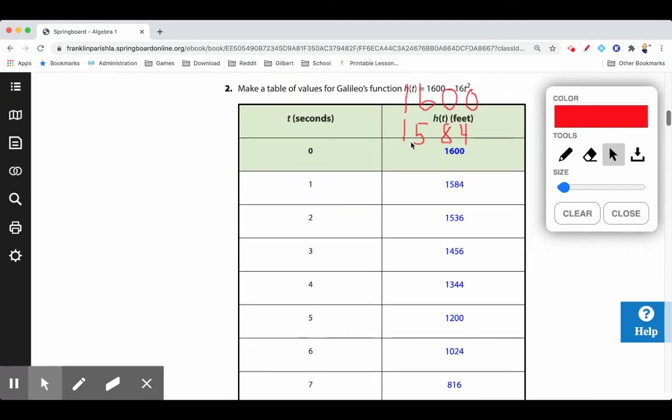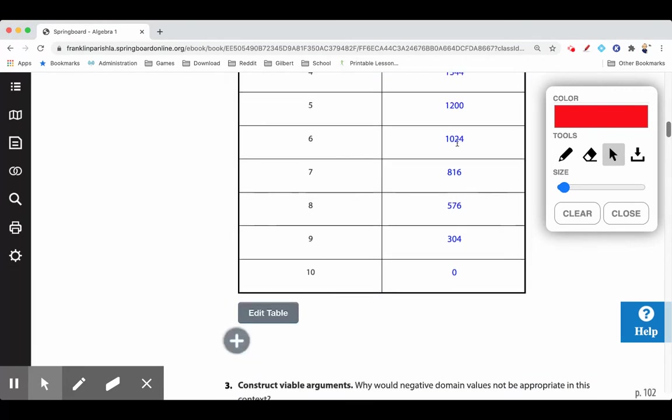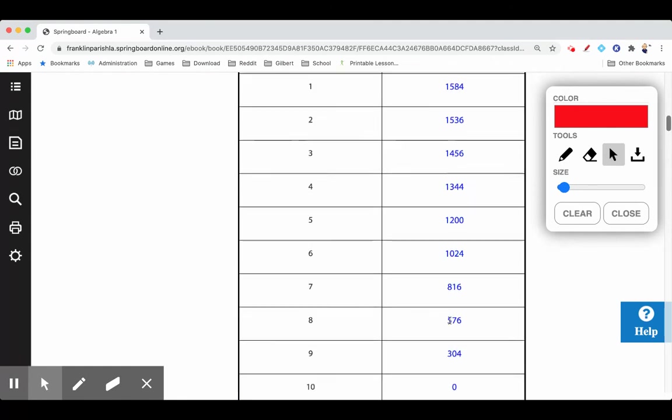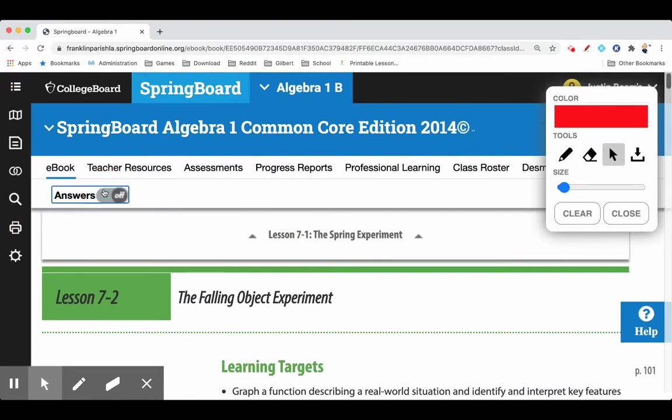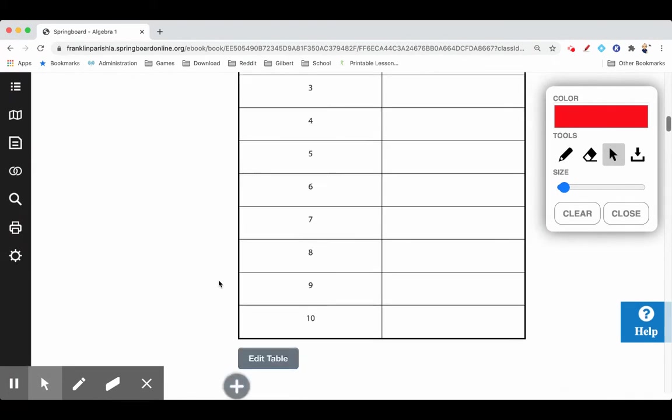What would a negative range value mean if this is 1600 feet and it goes to zero? What would it mean if it was a negative range value like negative five? It would probably be like below sea level or underneath the ground.